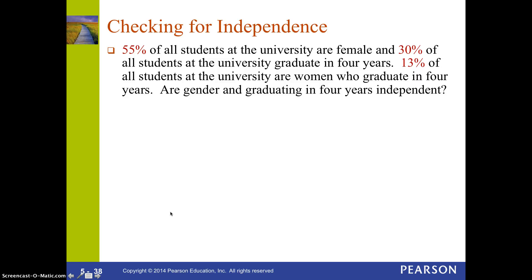Here's another example of checking for independence. The difference in this problem is I'm just giving you probabilities — I'm giving you some numbers and you've got to figure out some symbols to use for the problem.